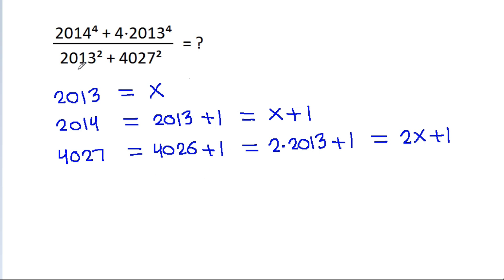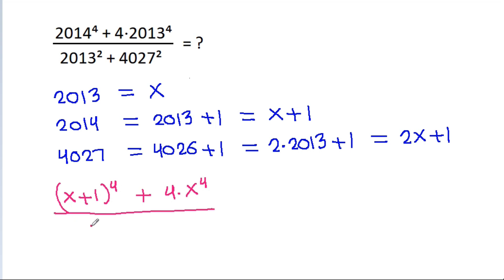So the expression becomes: (x plus 1) to the power 4 plus 4 times x to the power 4, divided by x squared plus (2x plus 1) squared.